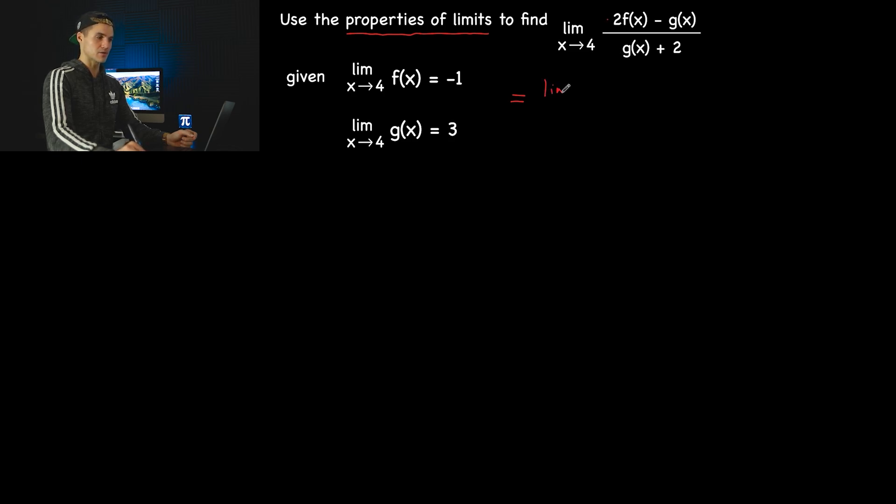So we'll have the limit as x approaches 4, and then let's write that entire numerator in brackets, so you don't just think I'm taking the limit of this if the brackets weren't there. The limit is of this entire numerator, that entire expression right there. Then we'll have the limit as x approaches 4 of this entire denominator, g(x) plus 2, like that.